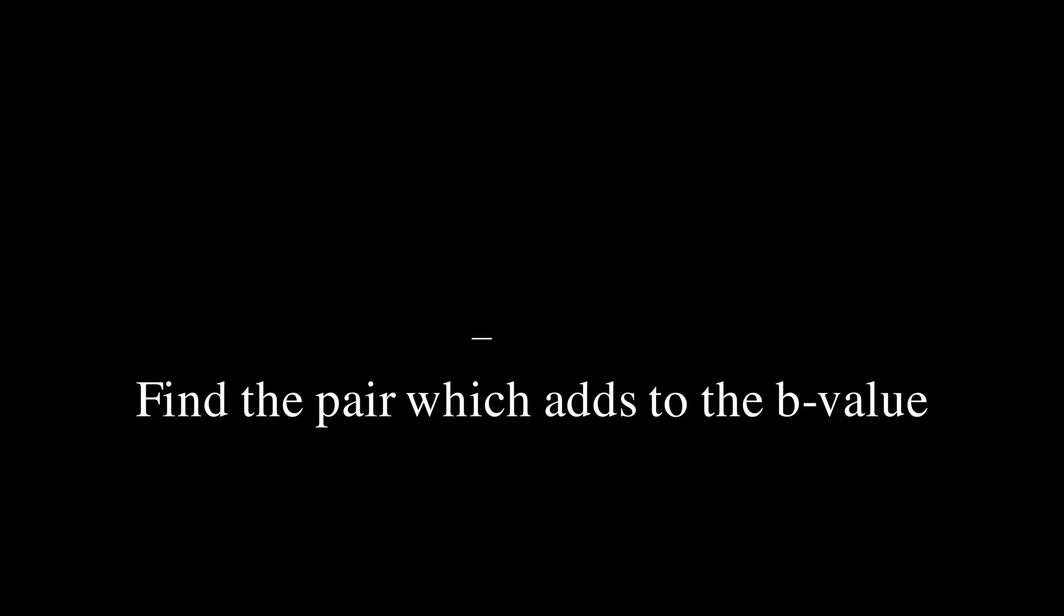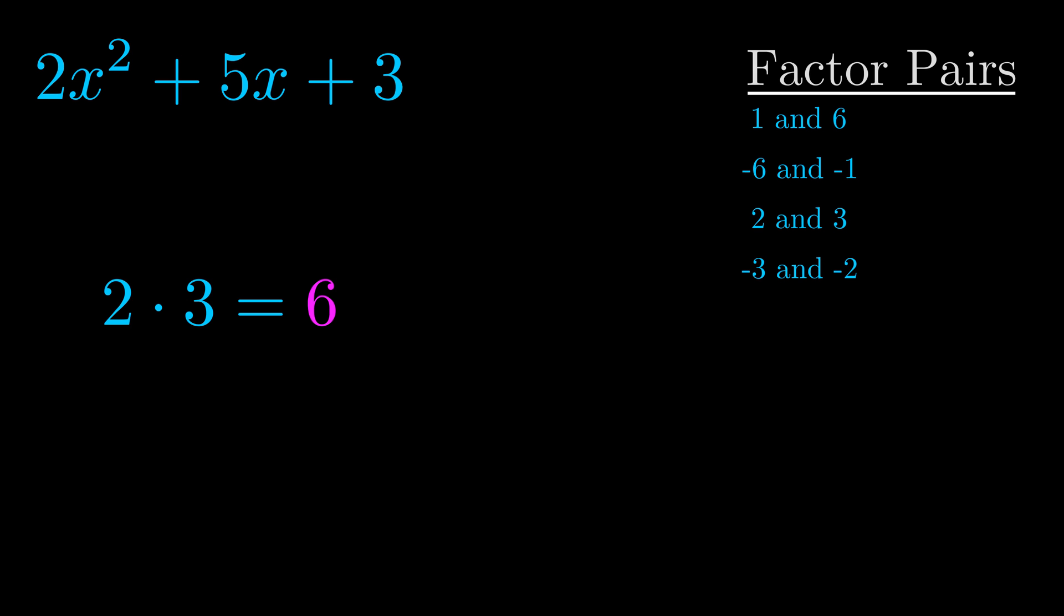The b value is the coefficient on the x term. That's the middle term, the one that we haven't done anything with yet. And really this is the only factor pair that we need.